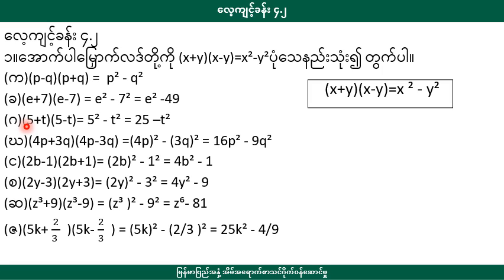So 4b plus t4 into 4b minus t4. For 4b minus t4, we take the steps: 4b squared minus t4 squared, which gives us 16b squared minus 9u squared.